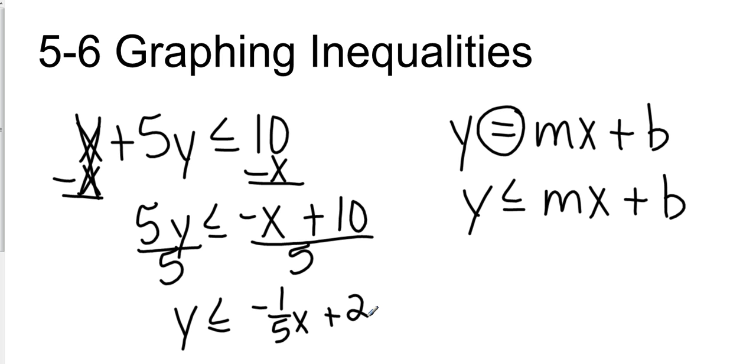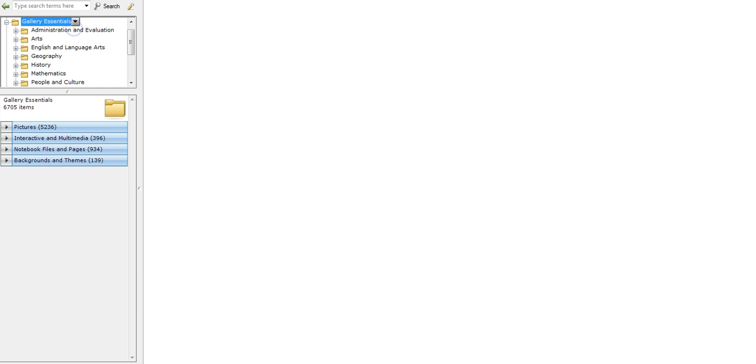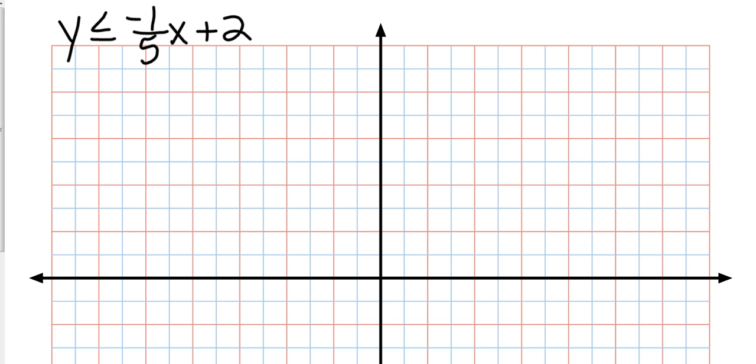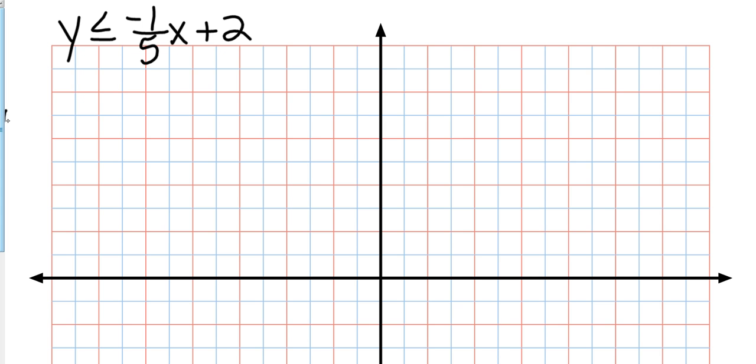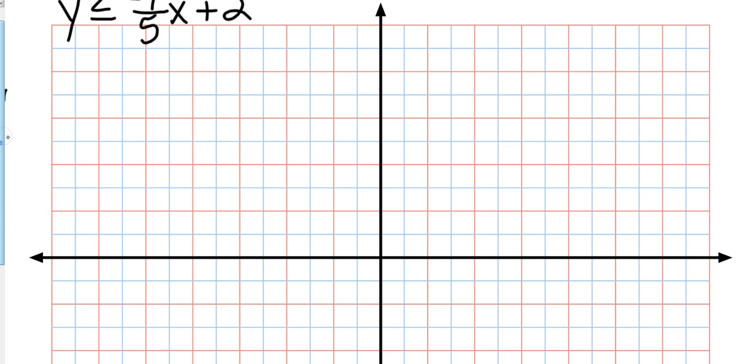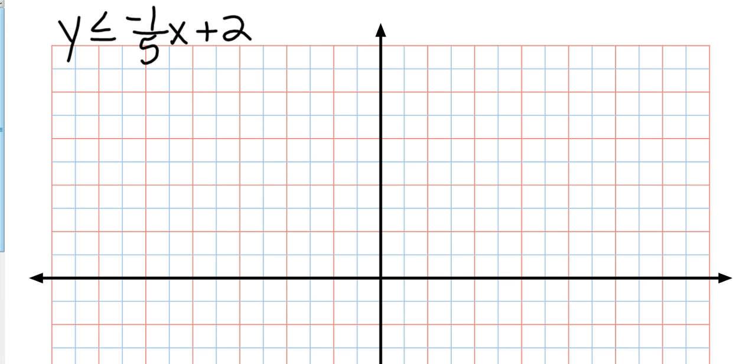So we're going to graph y is less than or equal to negative 1 fifth x plus 2. We've got some graph paper now and we have our equation written up there. Y is less than or equal to negative 1 fifth x plus 2. We have it in slope intercept form. So that tells me that our y intercept is at positive 2.